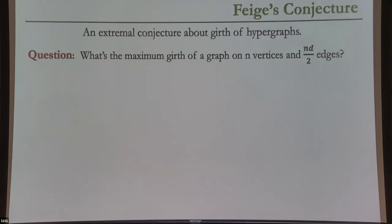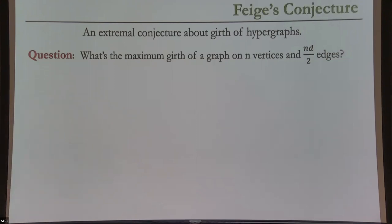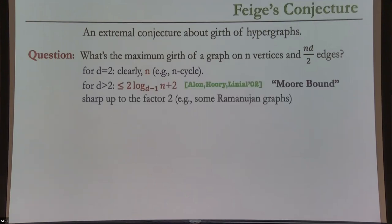Consider the following question: suppose I give you a graph on N vertices with average degree d, meaning N·d/2 edges. How large can you make the length of the smallest cycle — the girth — if you're free to choose the graph subject to these constraints? For example, if d equals 2, you can create one giant cycle: average degree two and girth N. Clearly for d=2 you can make it as large as N.